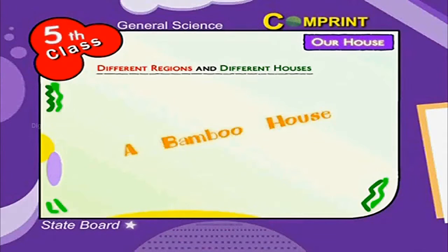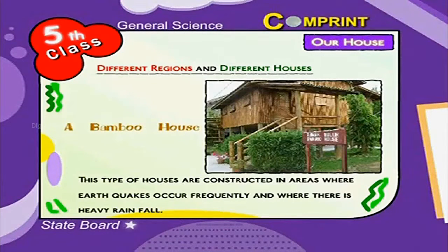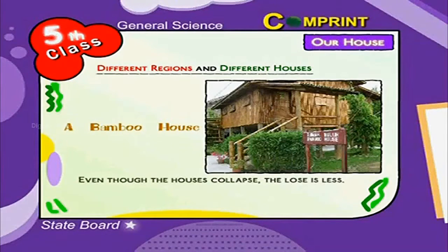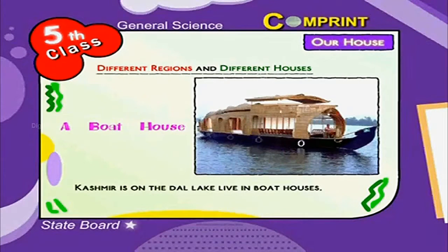A bamboo house: This type of house is constructed in areas where earthquakes occur frequently and where there is heavy rainfall. Even though the houses collapse, the loss is less. A boat house: Kashmiris on Dal Lake live in boat houses.